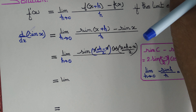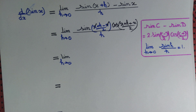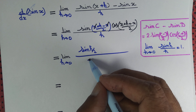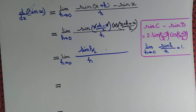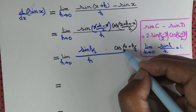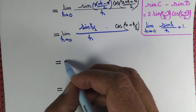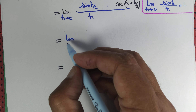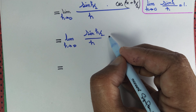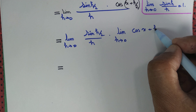So this limit is equal to the limit as h tends to 0 of sin(h/2) divided by h, times cos((2x+h)/2), which simplifies to cos(x + h/2). We then separate using the product of limits rule — provided both limits exist — giving us the limit as h tends to 0 of sin(h/2) divided by h, times the limit as h tends to 0 of cos(x + h/2).